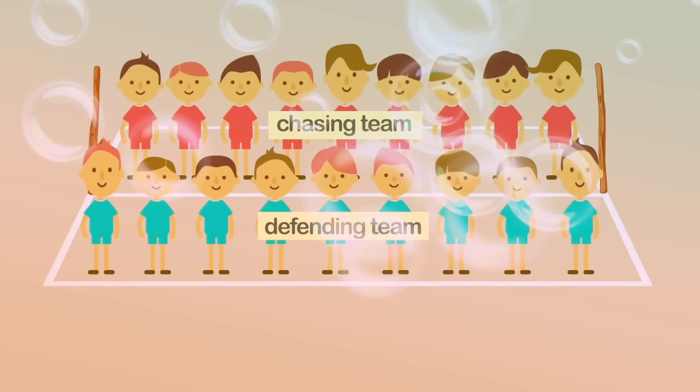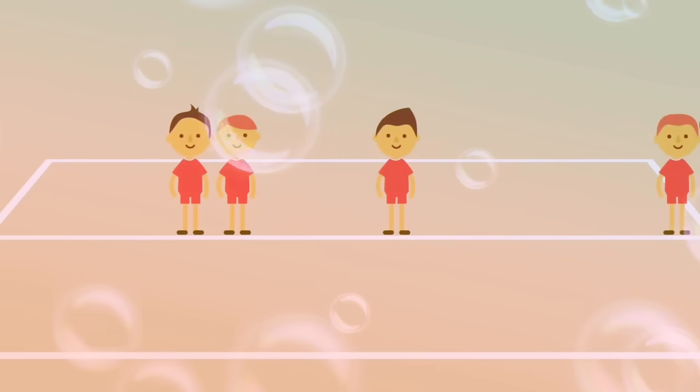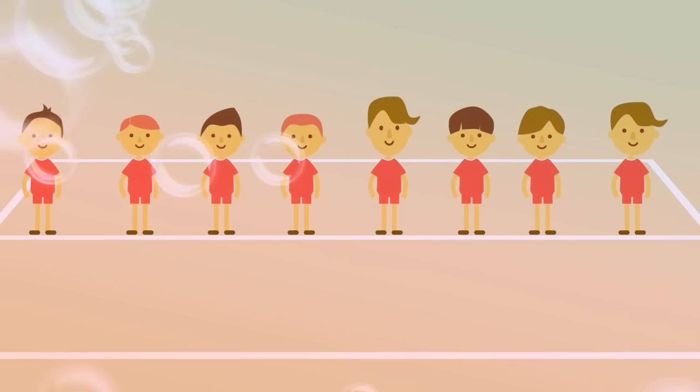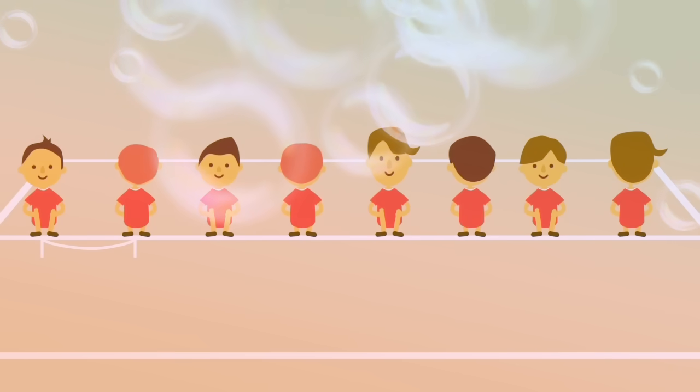The first step of playing Koko is the chasing team entering the court. Eight out of the nine players sit on the center line, all evenly spaced.